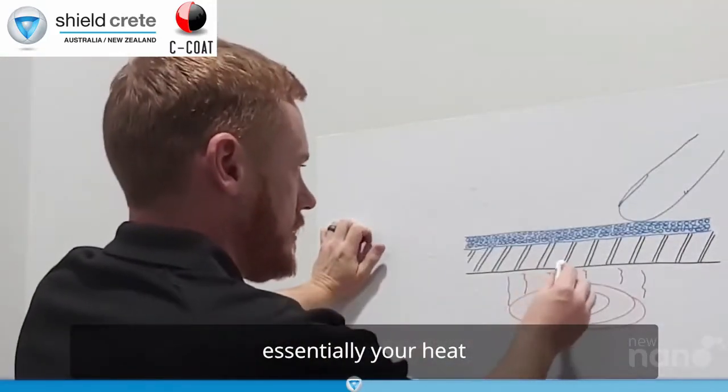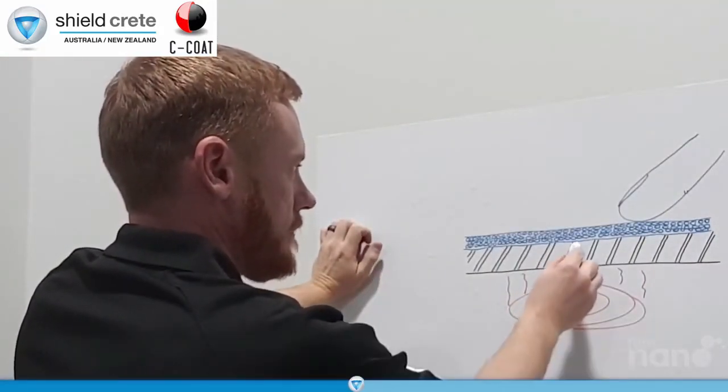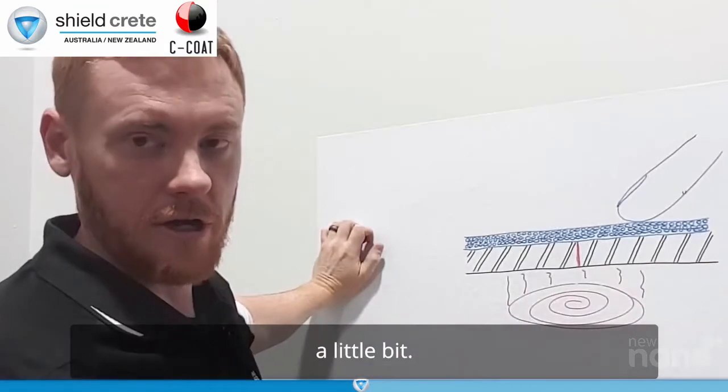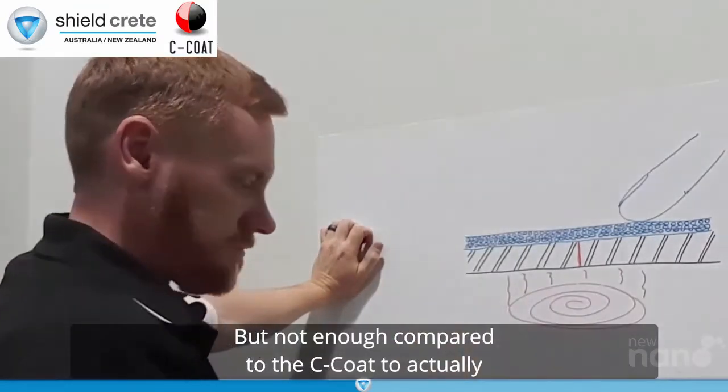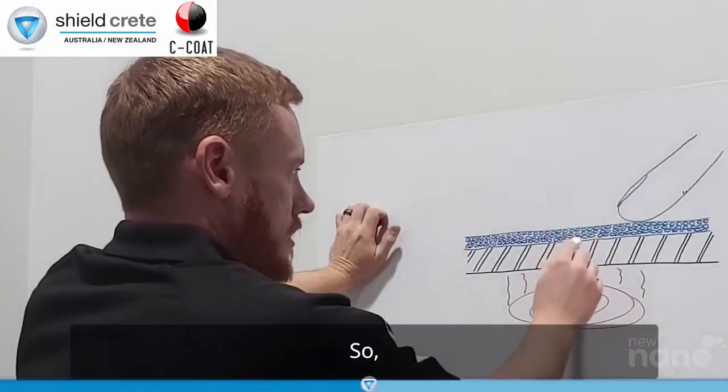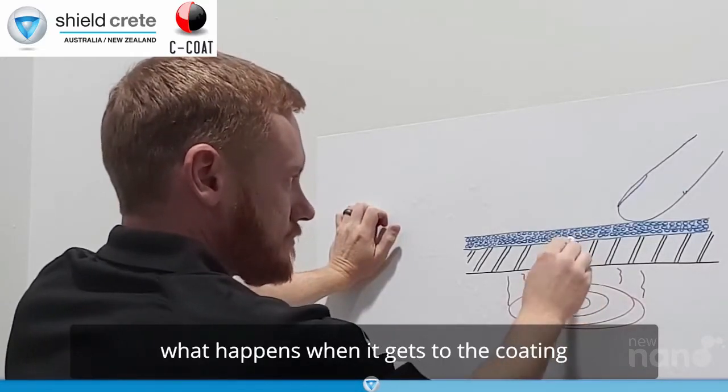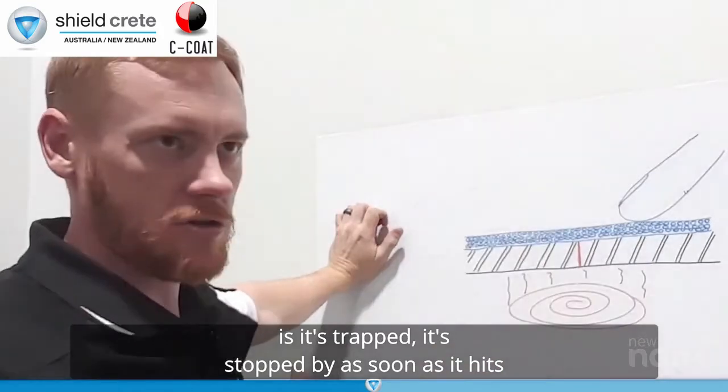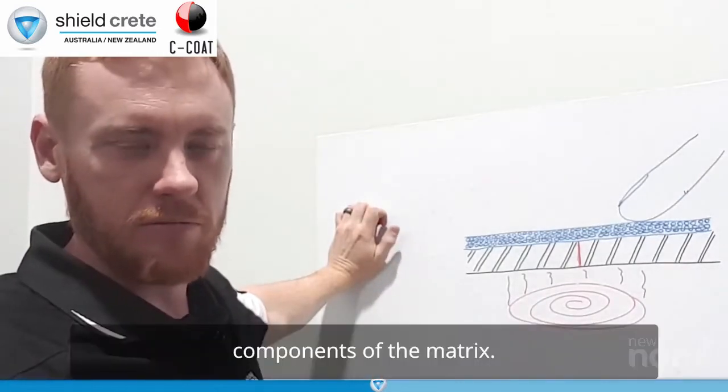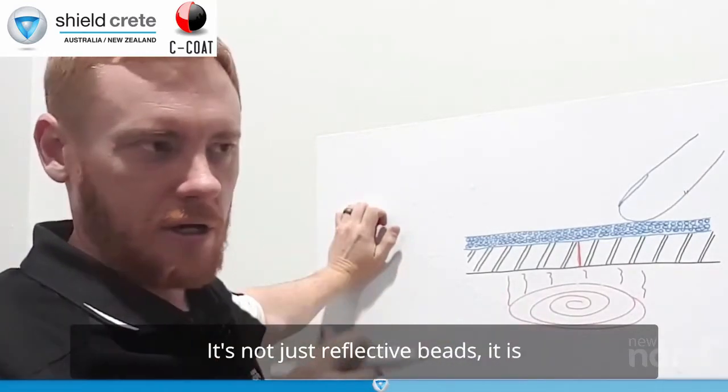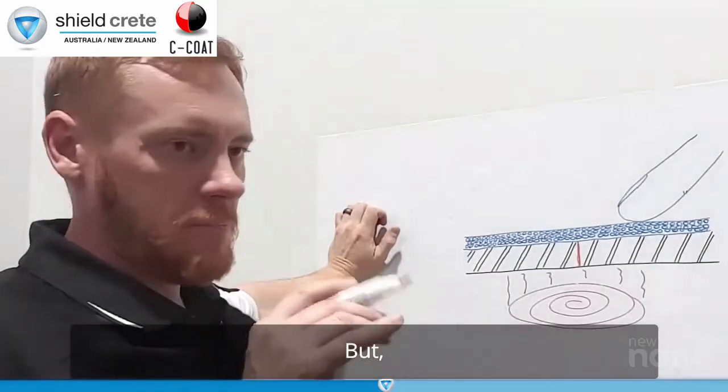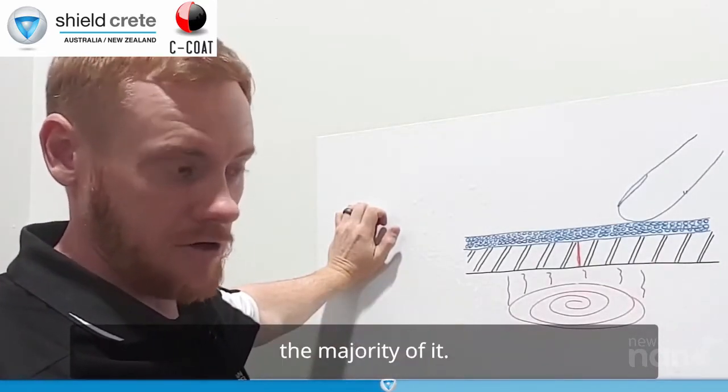And what happens is that acts in a number of ways to actually reduce the transfer of heat through it and the speed at which the heat transfers through that coating. So essentially, your heat comes up through here, pretty much a straight line. The steel doesn't slow it down at all. Concrete slows it down a little bit, but not enough compared to the C-coat to actually change these results. So what happens when it gets to the coating is it's trapped. It's stopped as soon as it hits one of the ceramic beads or one of the reflective components of the matrix. It's not just reflective beads. It is a whole host of different things that they've got in the matrix here.